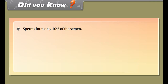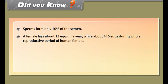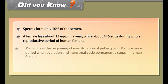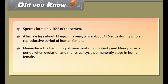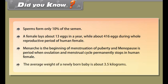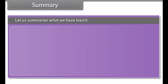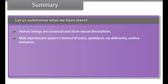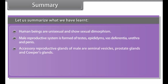Embryonic development of the zygote starts immediately in the fallopian tube and pregnancy starts while menstruation stops. The embryo moves down to reach the uterus. The embedding of the embryo in the thick inner lining of the uterus is called implantation. A special tissue called the placenta develops between the uterine wall and the embryo, where exchange of nutrients, oxygen, and waste products takes place. The time period from the development of the fetus inside the uterus till birth is called gestation, and the act of giving birth is termed parturition. Development takes approximately nine months.